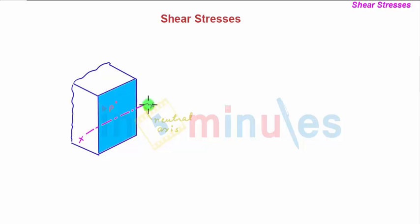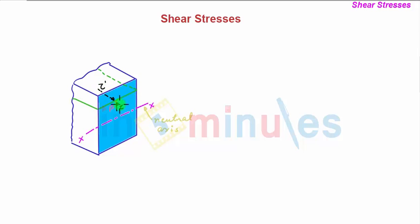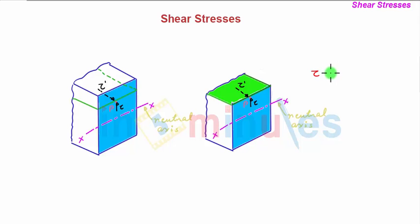Consider a section whose neutral axis and centroidal axis are shown in the figure. To determine the shear stress tau at point P on the cross-section, the shear stress remains constant over the horizontal layer passing through that point. We determine tau by considering the complementary shear stress tau dash, which acts on a horizontal plane passing through that layer and has the same magnitude as the vertical or transverse shear stress tau. Removing the upper part of the cross-section above this plane makes it clear that the transverse shear stress equals the complementary shear stress on the horizontal plane, both of equal magnitude, to prevent the beam from rotating.